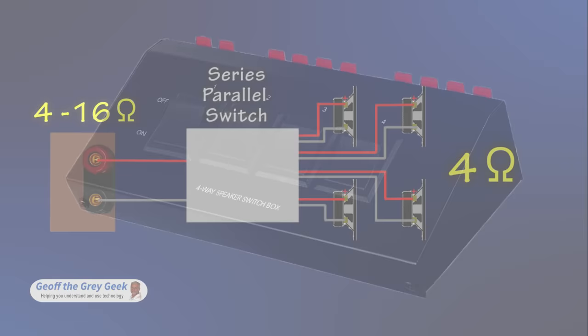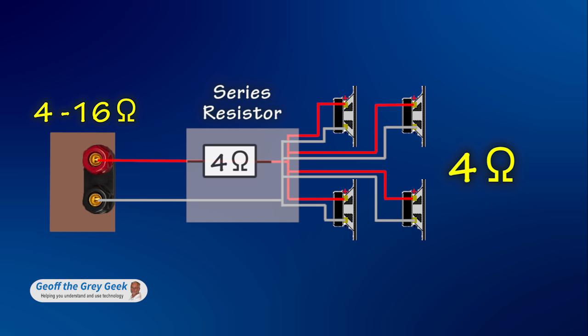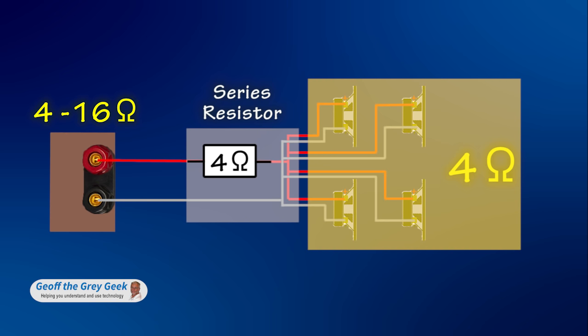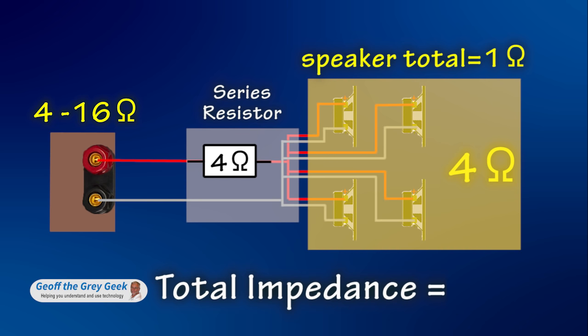The second method of impedance protection is to use a series resistor. A resistor normally around 4 ohms is put in series with the parallel speakers. Remember the total impedance of 4 ohm speakers in parallel? It was 1 ohm. 4 ohms in series with 1 ohm gives a total load impedance of 5 ohms, which makes the amp happy.